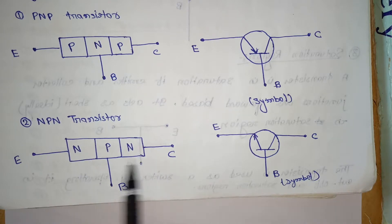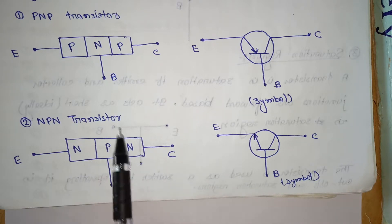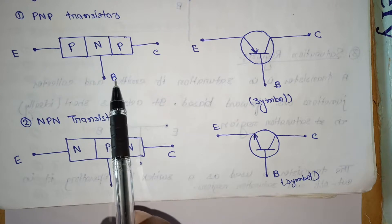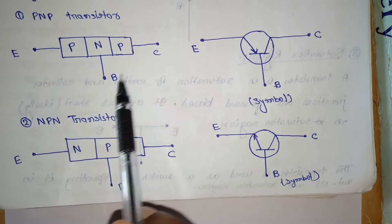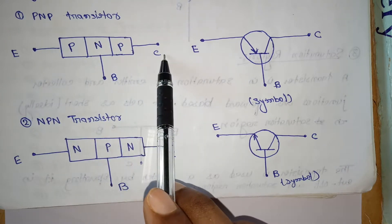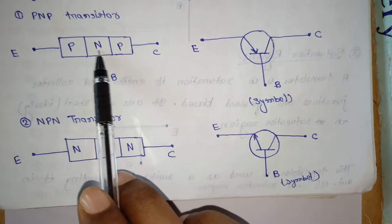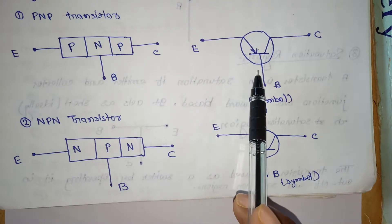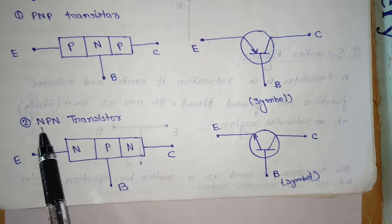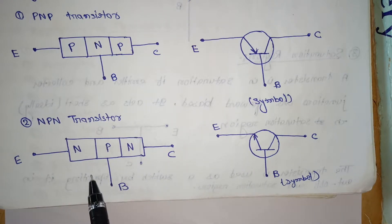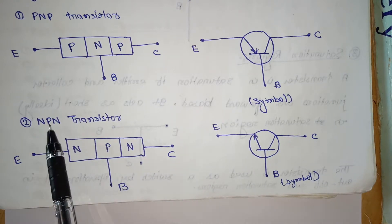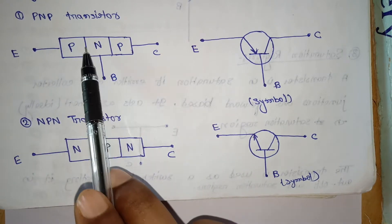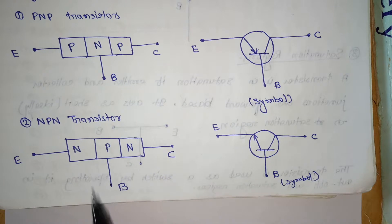In the NPN transistor, this is called the emitter, this is called the base, and this is called the collector. Similarly, this is the symbol for the NPN transistor. PNP and NPN transistor symbols are shown here.